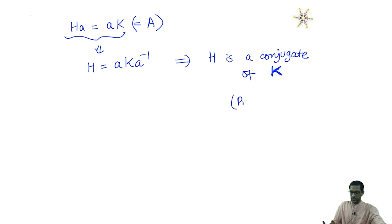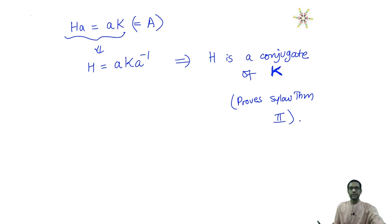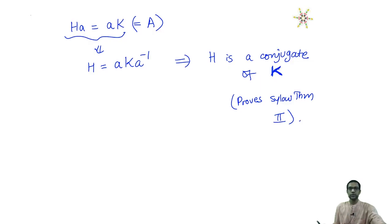As you can see, the Sylow theorems are all instances of one basic principle: a P-group acting on a set whose cardinality is not divisible by P must have fixed points. This property characterizes P-groups in the sense that the converse is also true. The converse was used in Sylow 1, and the forward principle is used in the proof of Sylow 2. Next time we will prove Sylow theorem number 3, which is again an application of the same principle.